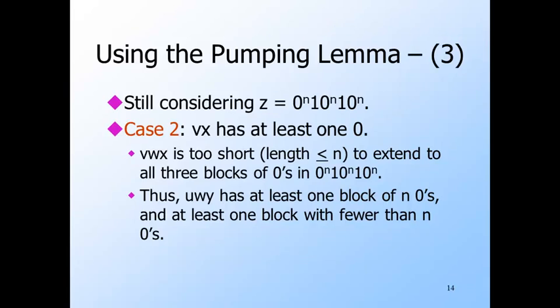But v and x have at least one zero, so in u w y, at least one of the blocks of zeros has fewer than n zeros. We conclude that in this case too, u w y cannot be in L. And thus, L cannot be context-free.